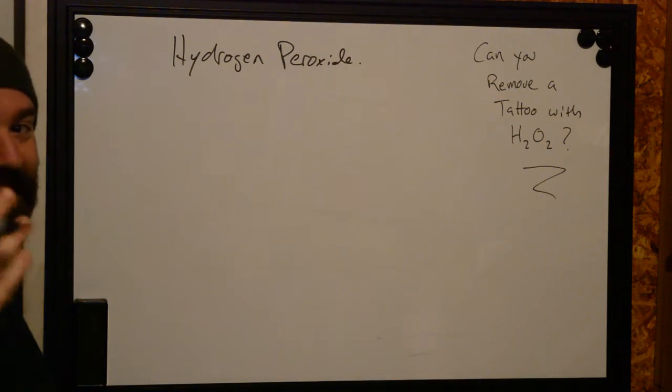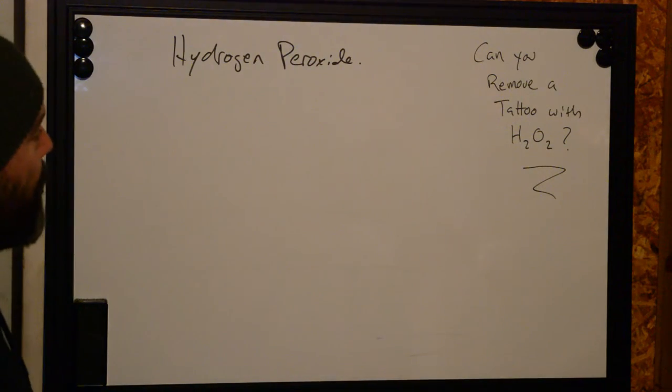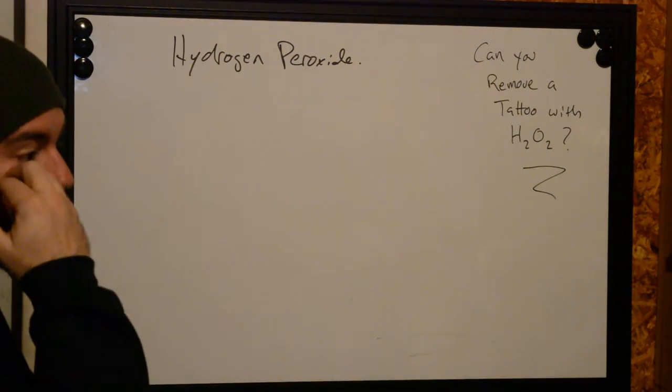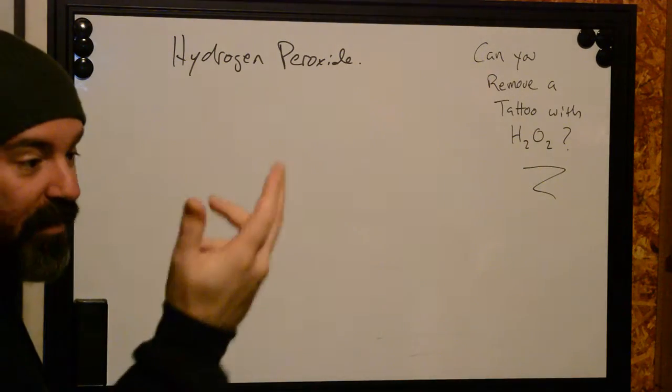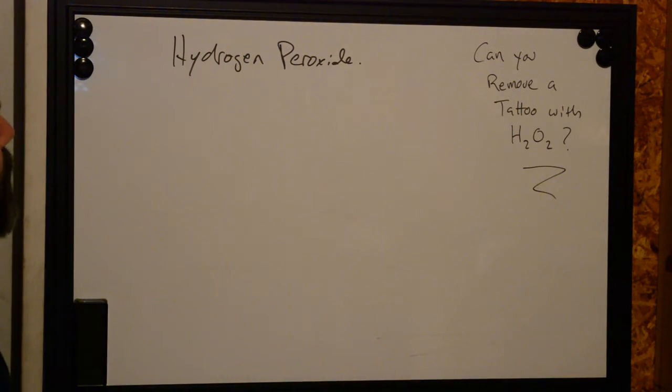What is a tattoo? A tattoo is pigment that has been injected into the top layer of the dermis. It's been held in place through an immunologic response, or it's just kind of trapped between specific cells inside the skin, and it stays there permanently.